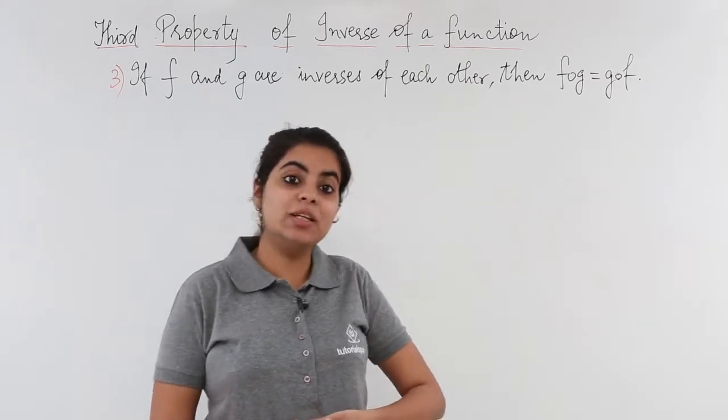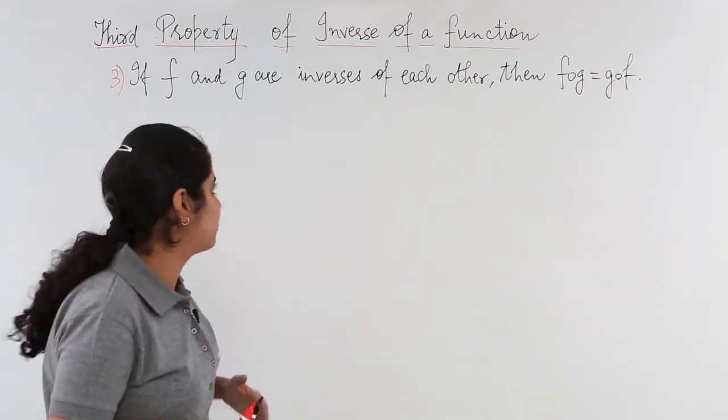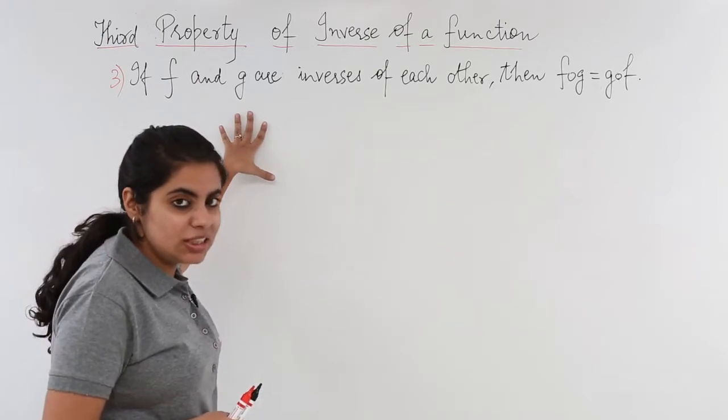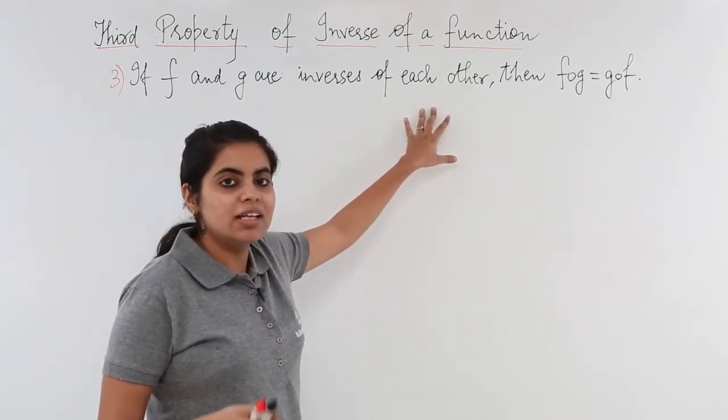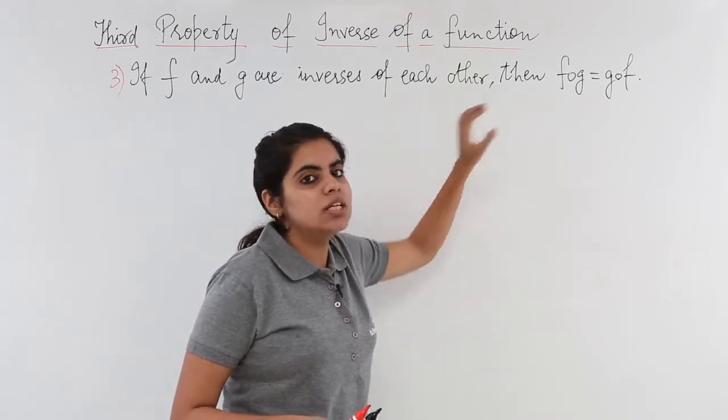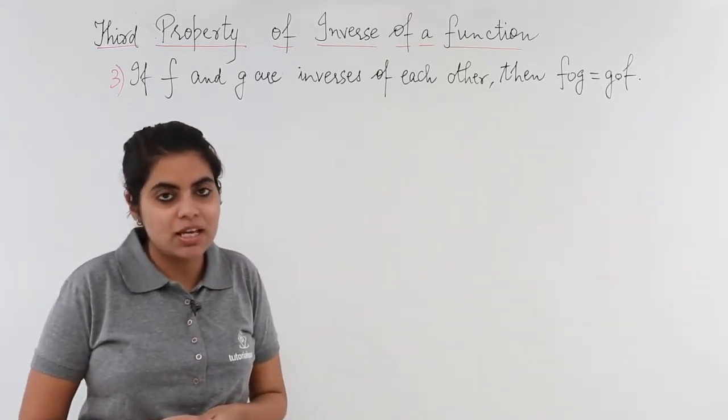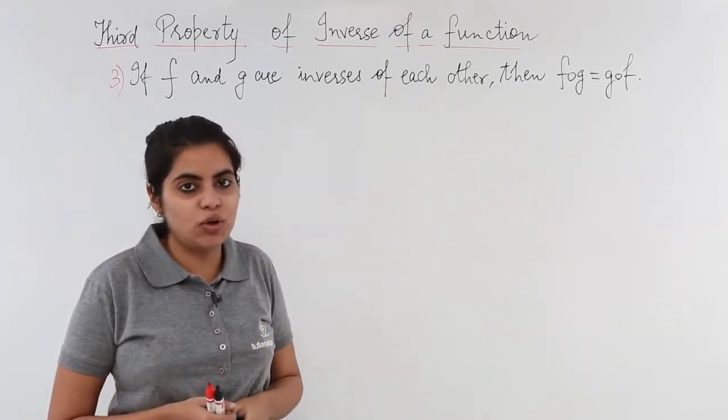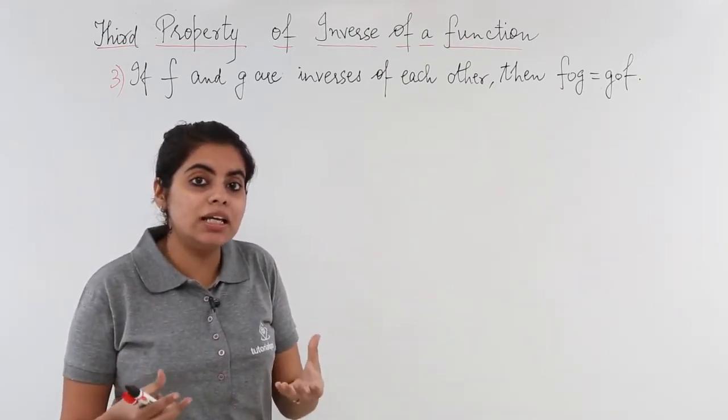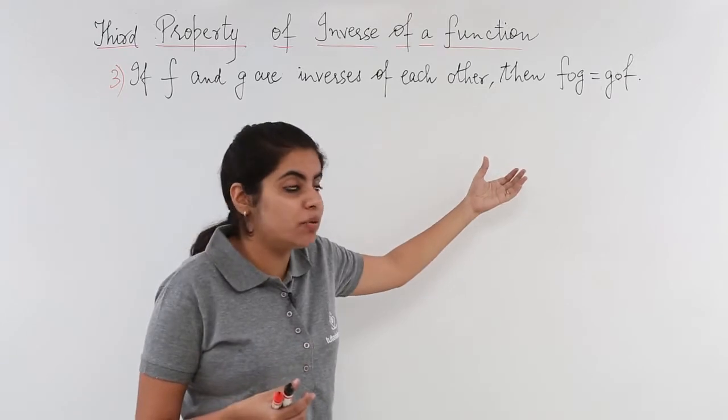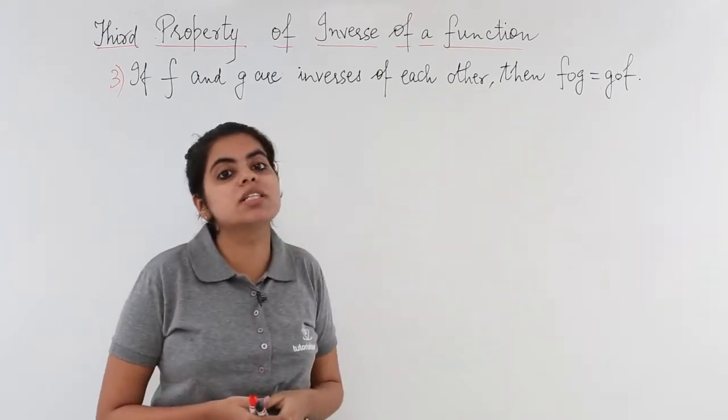Let's read the property together. If f and g are the inverses of each other, then fog is equal to gof. That means we have already studied about the composition of functions fog and gof. If they are equal, it will be possible only when f and g are inverses of each other.